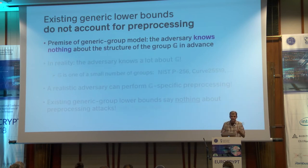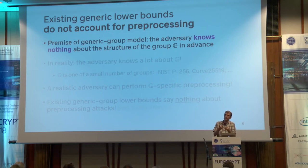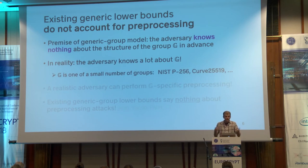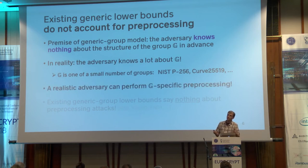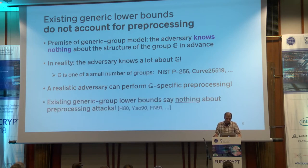One reason for concern about the generic model is that it doesn't account for what we call preprocessing attacks. The premise of the model is that the adversary doesn't know anything about the structure of the group when it starts executing, and the only way it can learn about the group is by talking to this oracle. But in reality, there's only a small number of groups we use for key exchange on the internet. A realistic adversary can perform preprocessing relative to one of these groups and potentially use that preprocessing to solve discrete log faster later on. The existing generic lower bounds don't say anything about what happens in the face of these preprocessing attacks.